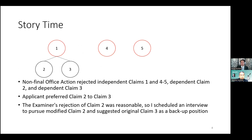So in this case, the non-final office action rejected independent claims one, four, and five, dependent claim two, and dependent claim three. Based on the subject matter of the claims, the applicant preferred the scope of Claim 2 to the scope of Claim 3. The examiner's rejection of Claim 2 was reasonable, and the examiner's rejection of Claim 3 wasn't quite reasonable.